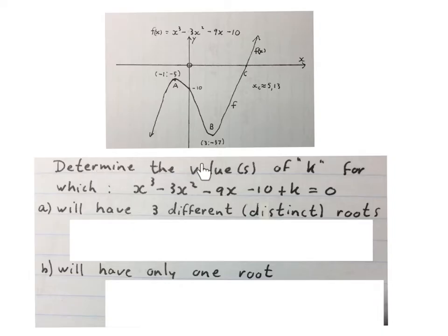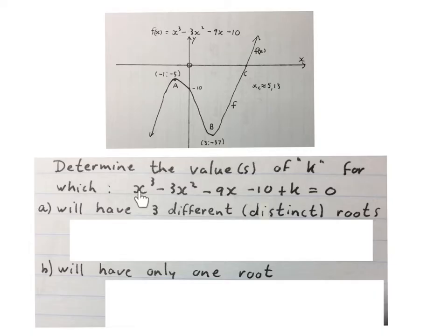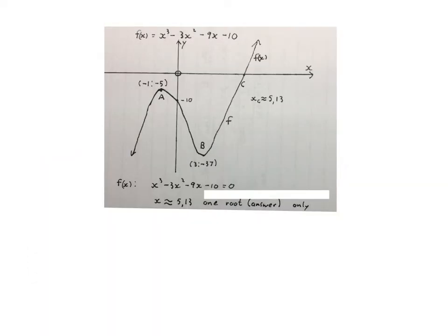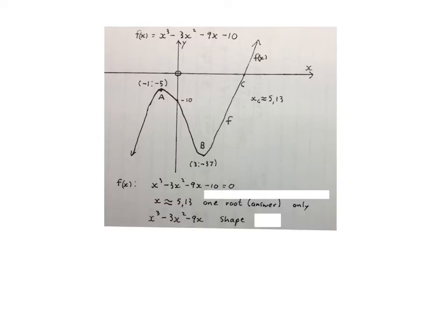The question then says: determine the value or values of k for which f(x) plus k equals zero will have three different distinct roots, and secondly will have one root. If you look at the front part of this equation you'll see it looks exactly the same as the equation of f of x, so it's asking you to take f of x and shift it up or down. If you take this cubic function and equate it to zero, you'll find one solution: x is rounded off to 5.13. So it only has one root.